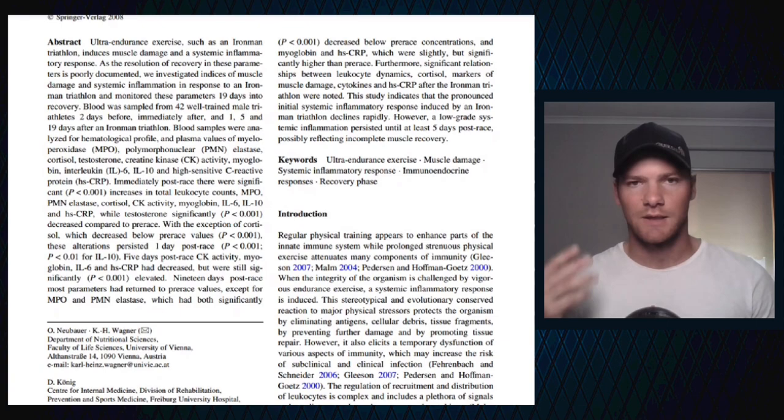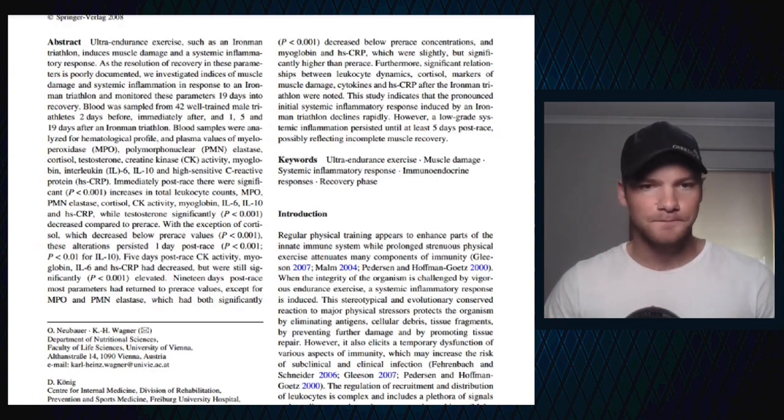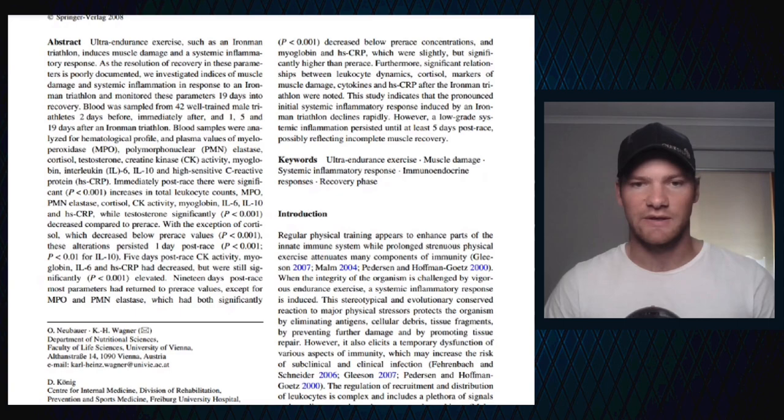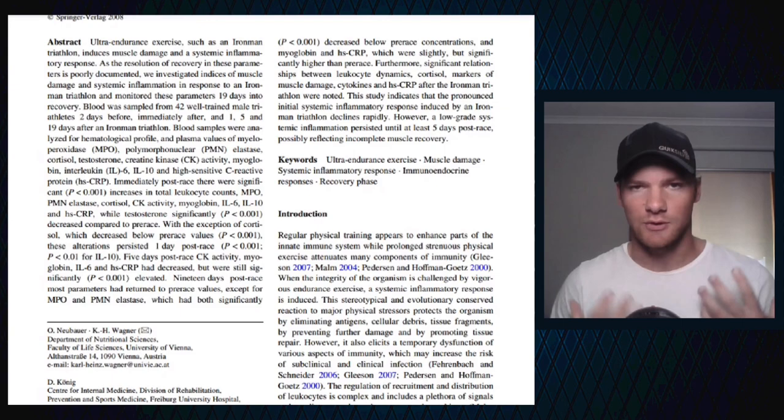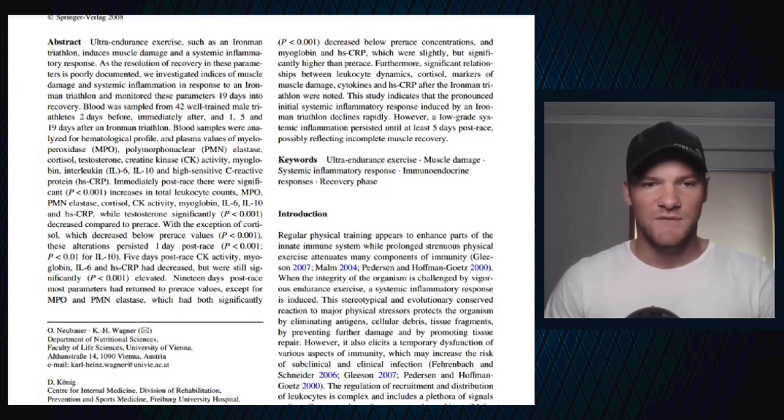Blood was sampled from 42 well-trained male triathletes two days before, immediately after, and one, five, and 19 days after an Ironman triathlon. Blood samples were analyzed for myeloperoxidase, polymorphonuclear elastase - these are enzymes released from white blood cells, essentially measures of immune activity. Cortisol, testosterone - both important hormones in recovery and stress. Creatine kinase activity, myoglobin - both measures of muscular damage.